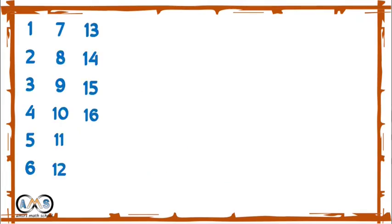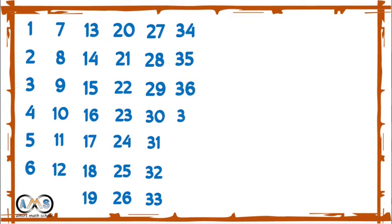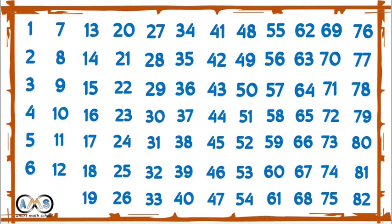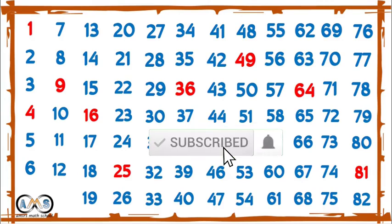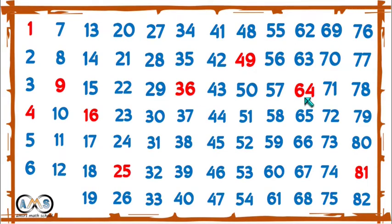Here we see the integers from 1 to 81. Among these numbers, some numbers are perfect square numbers. The red marked numbers are perfect squares — that is 1, 4, 9, 16, 25, 36, 49, 64, and 81.